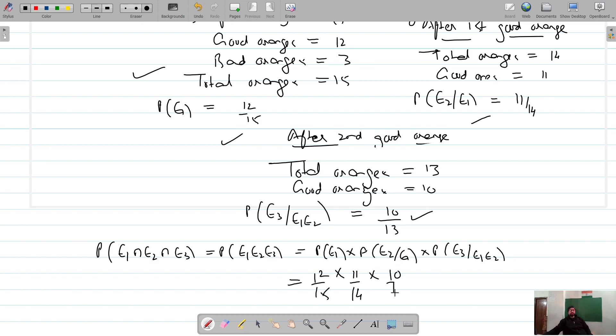So it's 12 by 15 times 11 by 14 times 10 by 13. That simplifies to 4 times 11 times 10 divided by 5 times 7 times 13. The answer is 11 times 4 equals 44, so it should be 44 by 91. That should be the answer for this one.